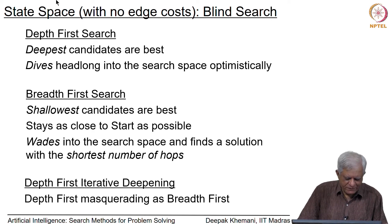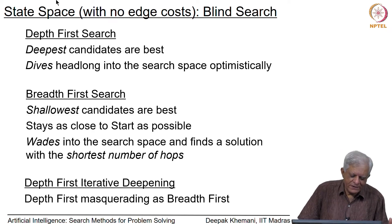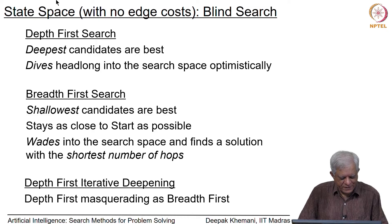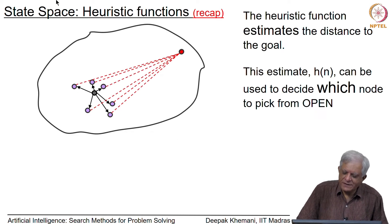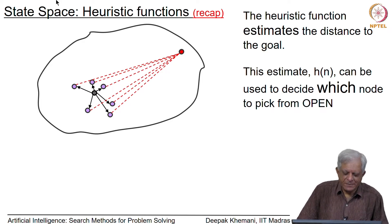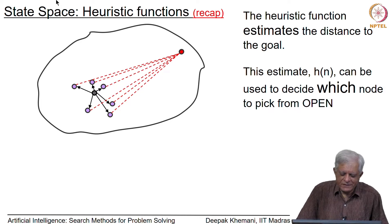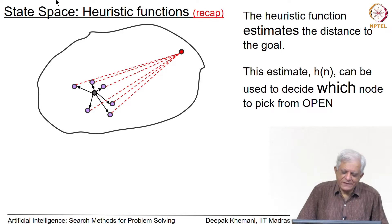We saw depth first iterative deepening, which was basically depth first search in its behavior though it retained the advantages of lower memory cost. We also saw informed search algorithms and looked at the notion of heuristic functions. A heuristic function is a function which estimates the distance to the goal and this estimate is used to guide the search process.